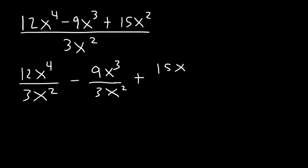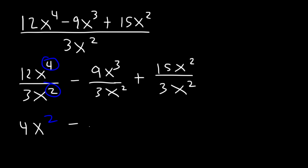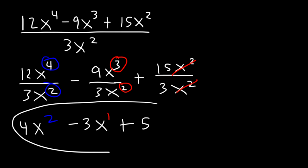You can avoid long division this way. If you're dividing by a binomial, which has two terms, you need to use long division. So: 12 divided by 3 is 4, and when you divide by a common base, subtract the exponents — 4 minus 2 is 2. Negative 9 divided by 3 is negative 3, and 3 minus 2 is 1, so that's negative 3x. The x squared cancels in the last term, so 15 divided by 3 is 5. The answer is 4x squared minus 3x plus 5.